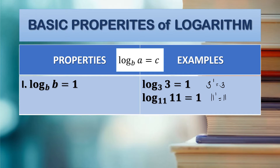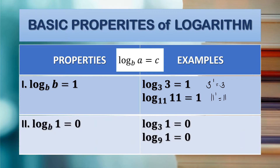Next property, Property 2: the log of 1 with base b is equal to 0. Any value of the base with exponent 0 is equal to 1. Example: log of 1 with base 3 is equal to 0. By the law of exponents, any value of the base, as long as the exponent is 0, its equivalent is always 1. Next example: log of 1 with base 9 is equal to 0, so 9 raised to 0 equals 1.